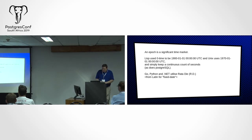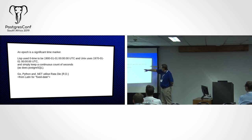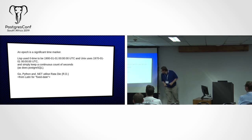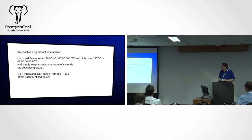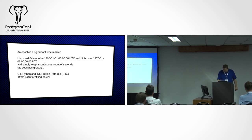Then we get the idea of an epoch. Lisp set its time to start at 1900; Unix uses 1970, and so does Postgres. The various calendars differ — some start at midnight and some at midday. For example, we use Julian dates based on the Gregorian calendar, but it starts at midday while we use it in the computer world from midnight. So if you ever work with time it's going to make your mind spin.